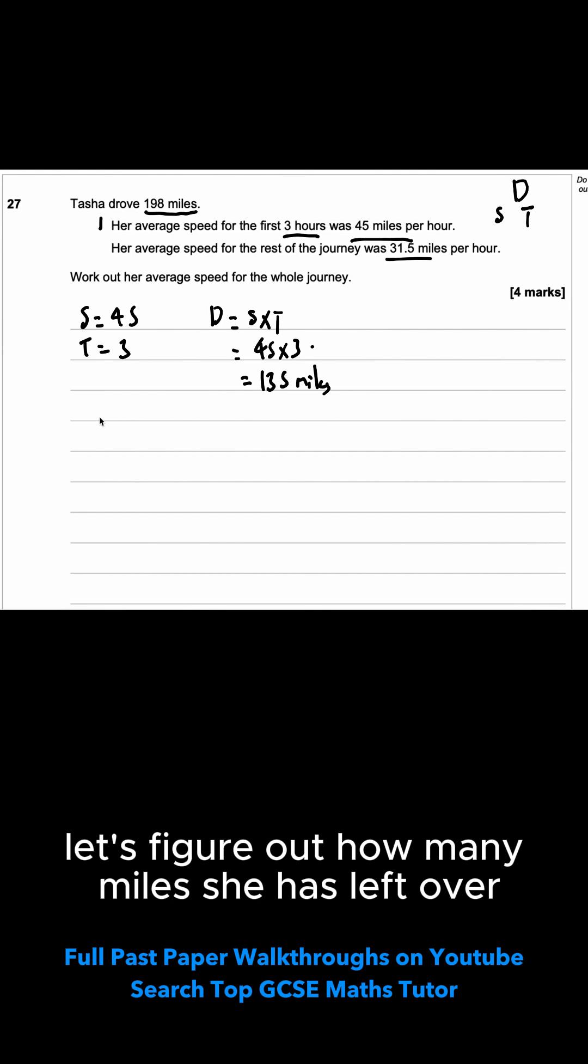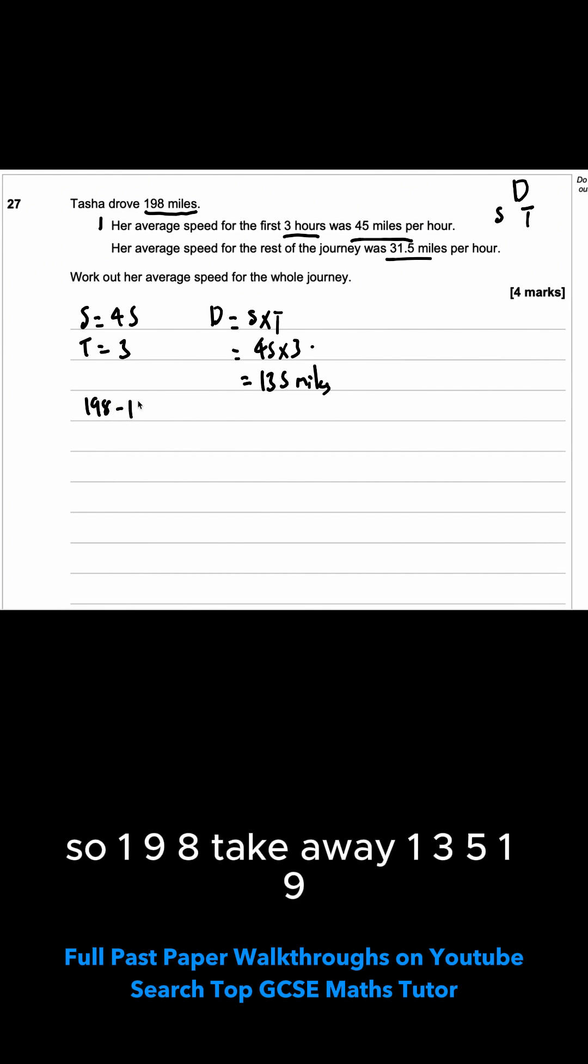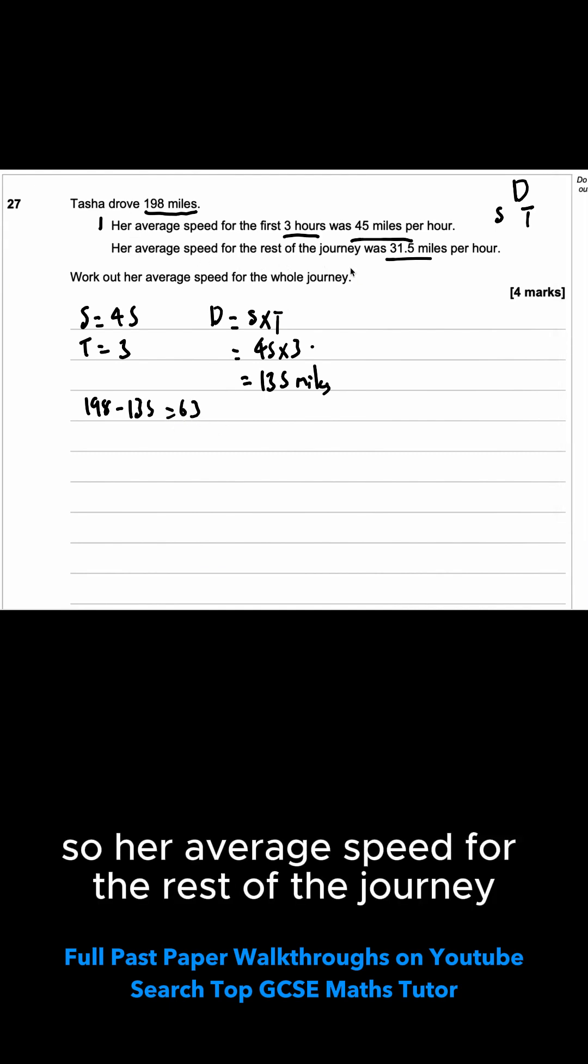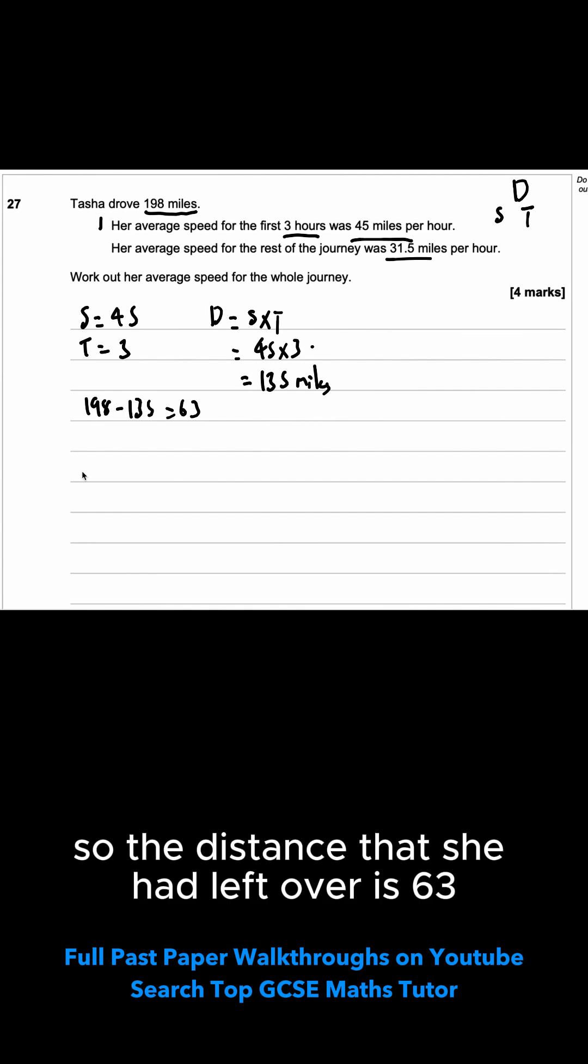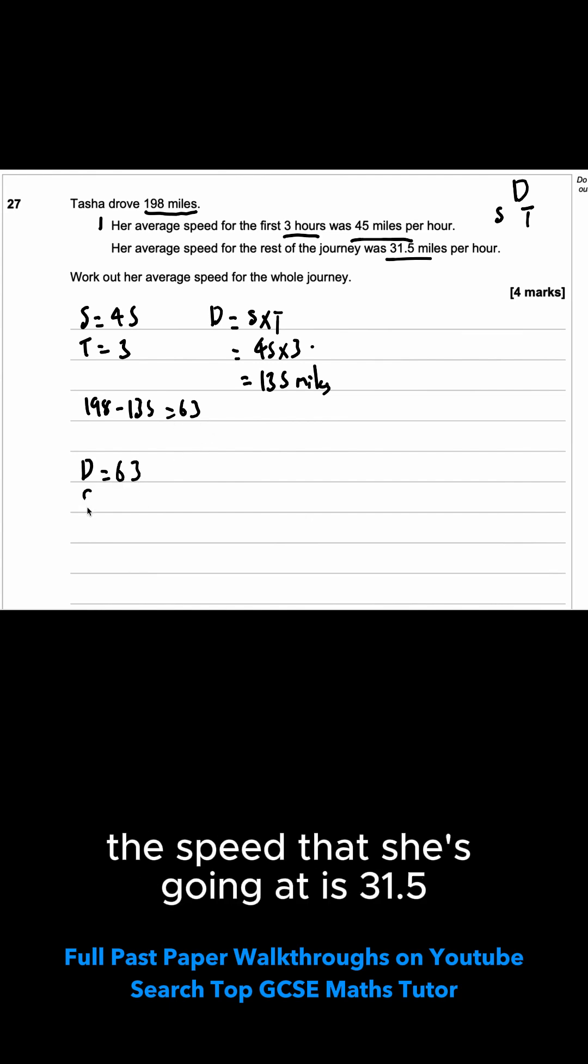Let's figure out how many miles she has left over. So 198 take away 135. 198 take away 135 which is 63. So her average speed for the rest of the journey was 31.5 miles per hour. So the distance that she had left over is 63. The speed that she's going at is 31.5.